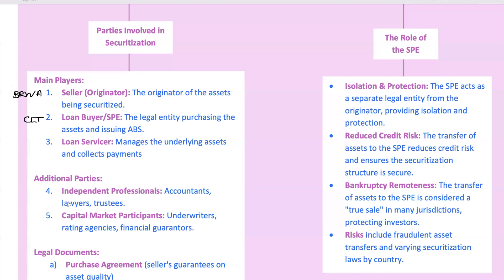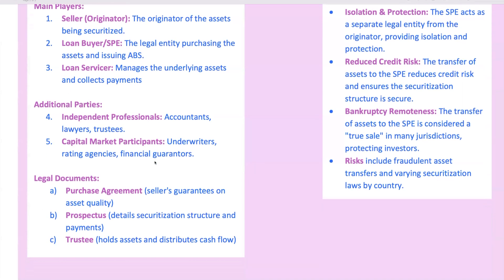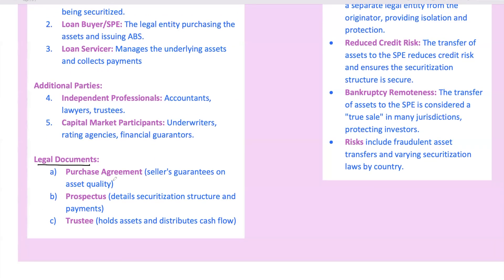There are also additional parties involved, including underwriters who help sell the ABS to investors, and rating agencies, which assess the credit risk of the ABS to give investors a sense of the securities' reliability. The trustee is an independent financial institution that holds the assets, ensuring that payments are distributed to ABS investors according to the structure outlined in legal documents. These documents include the purchase agreement, which guarantees the quality of the assets, and the prospectus, which details the payment structure, risks, and any credit enhancements provided for the ABS.